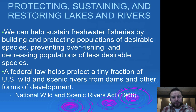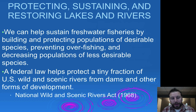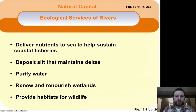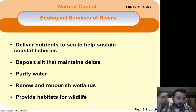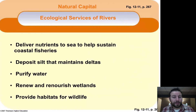We have some federal laws that help us, such as the National Wild and Scenic Rivers Act of 1968, which helps protect some of these areas from development. But it's an issue, especially when energy is needed and certain practices have been in place for a while. The ecological services of rivers include depositing silt that maintains deltas, delivering nutrients, purifying water, renewing and nourishing wetlands, providing habitat for wildlife, and delivering nutrients to the sea to sustain coastal fisheries. We'll talk more about legislation protecting our freshwater and marine systems, but that's your basic overview. Hope you enjoyed the screencast — take care.